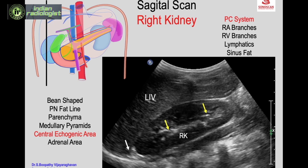Above the upper pole of the right kidney is the adrenal area. The normal adrenal is not visualized on ultrasound in adults.